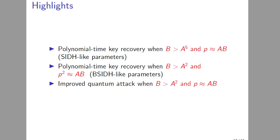Let me give some highlights of this graph, which are the most important parameter choices for which we have certain attacks. The first is polynomial-time key recovery when B > A^5 and p ≈ AB, which is an SIDH-like parameter choice, and was actually chosen in some designs, most importantly a group key exchange with six or more parties. The second one is polynomial-time key recovery when B > A^2 and p^2 ≈ AB, which is a B-SIDH-like parameter choice. Again, not chosen in B-SIDH itself because there the parameters are chosen to be balanced. And the third one is an improved quantum attack whenever B > A^2 and p ≈ AB, which again is an SIDH-like parameter choice.